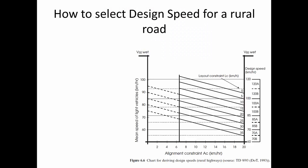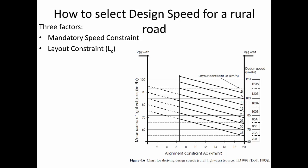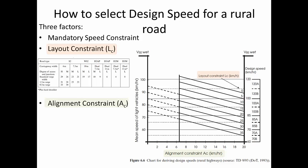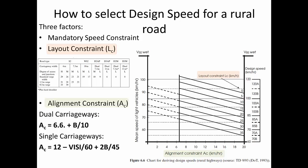All of these factors are taken into account when selecting a design speed for a given road. We have to take account of the mandatory speed constraint — in the UK this is 60 miles per hour for a single carriageway and 70 miles per hour for a dual carriageway — as well as the layout constraint and the alignment constraint. The layout constraint relates to points of access and the road cross section, including the verge width. The alignment constraint relates to the bendiness of the road and the visibility due to the curvature. We have two equations, one for dual carriageways and one for single carriageways; the single carriageway equation is more onerous.